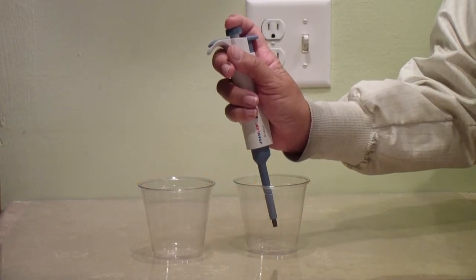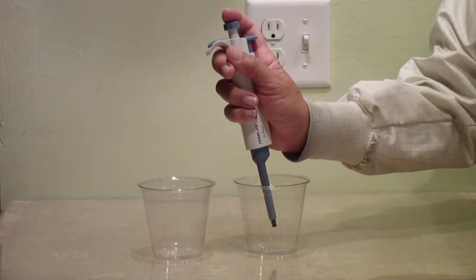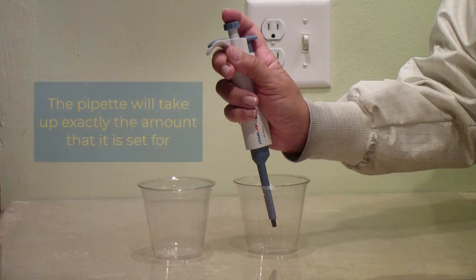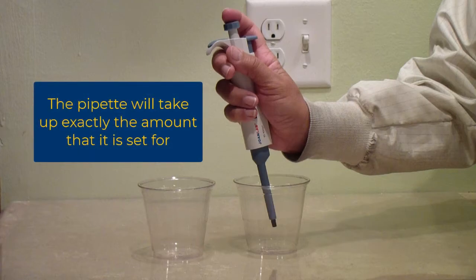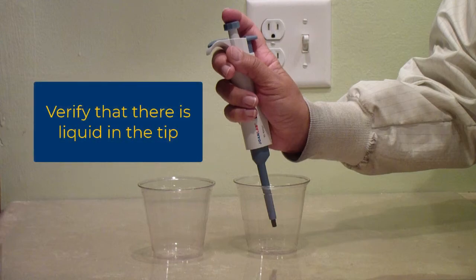Now gently guide the plunger upward, releasing it. The action of the pipette will suck exactly 90 microliters of your imaginary liquid into the tip. Normally you would look at the tip to visually verify that the liquid is in there.